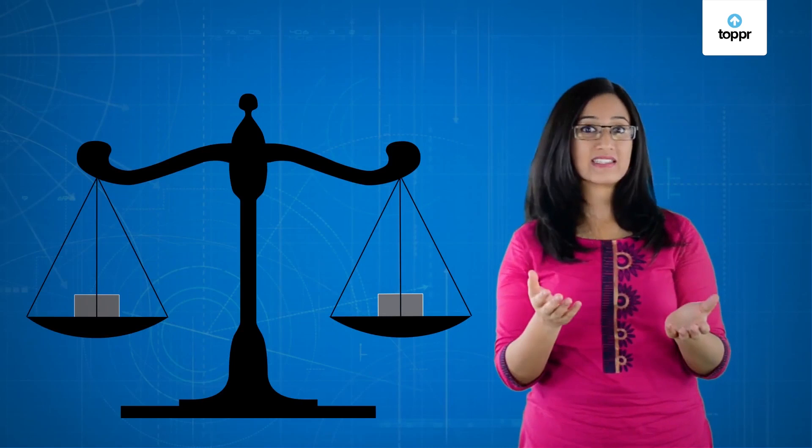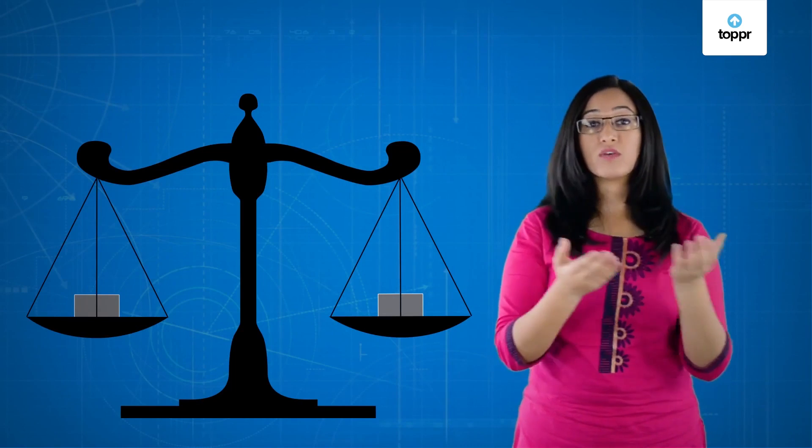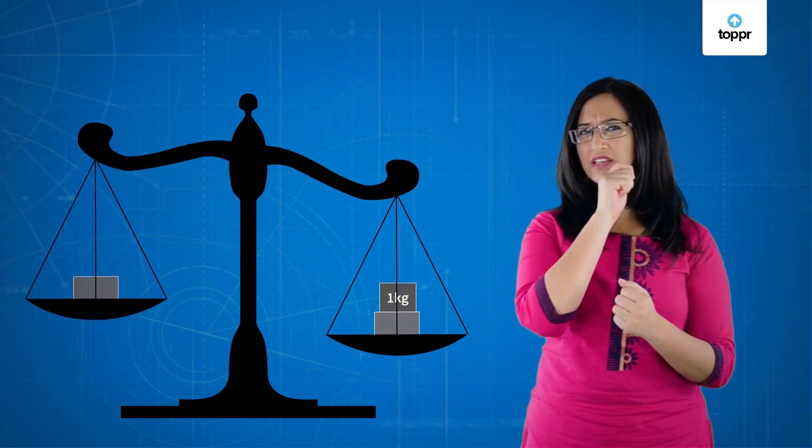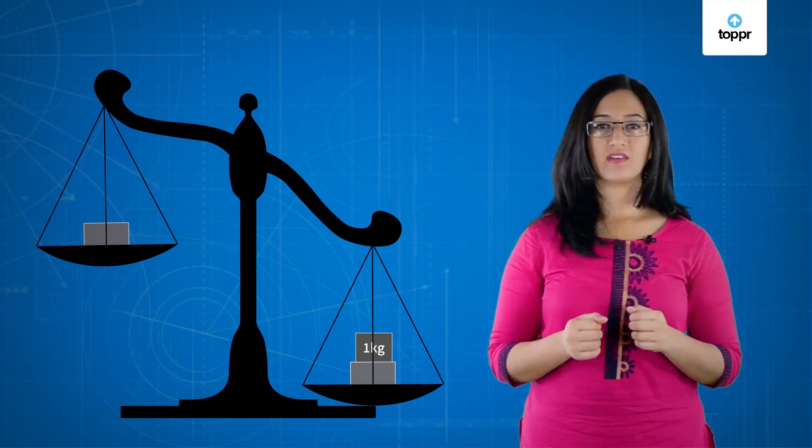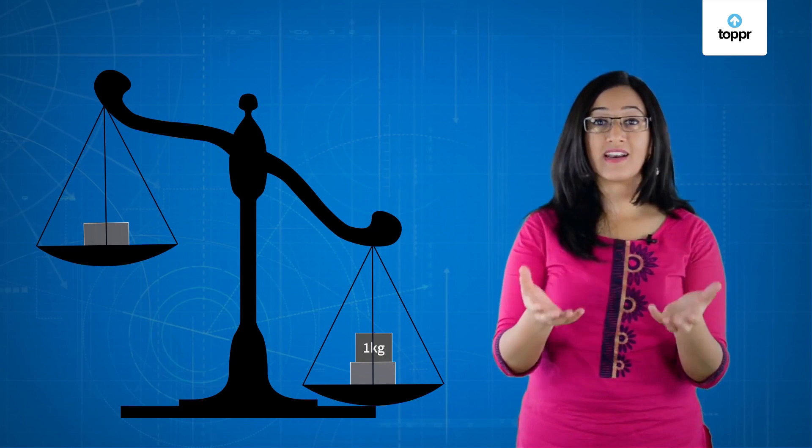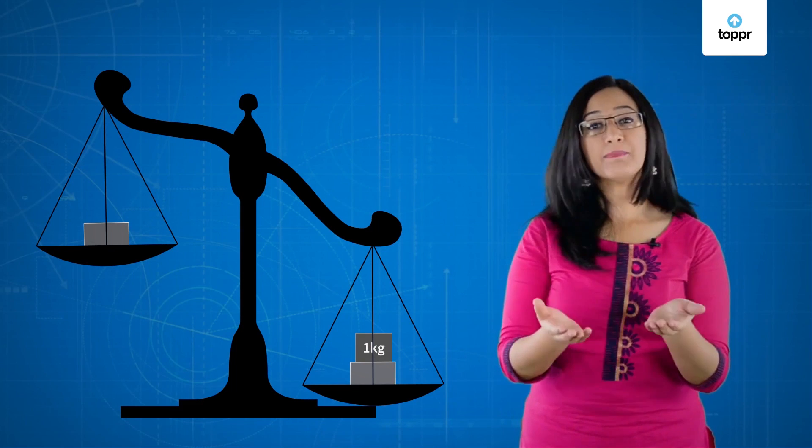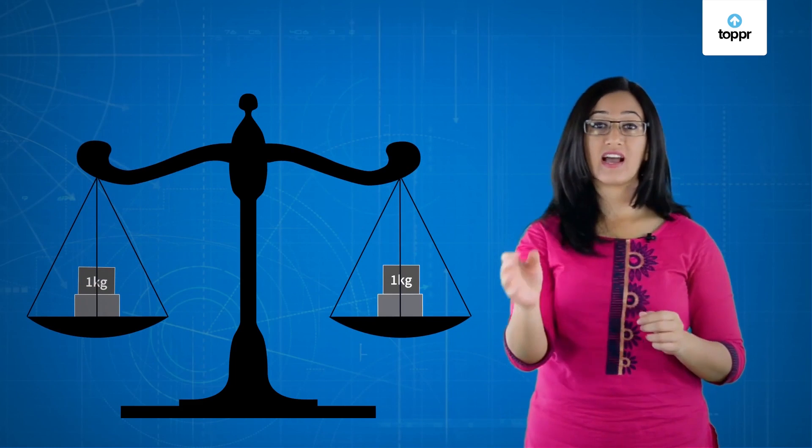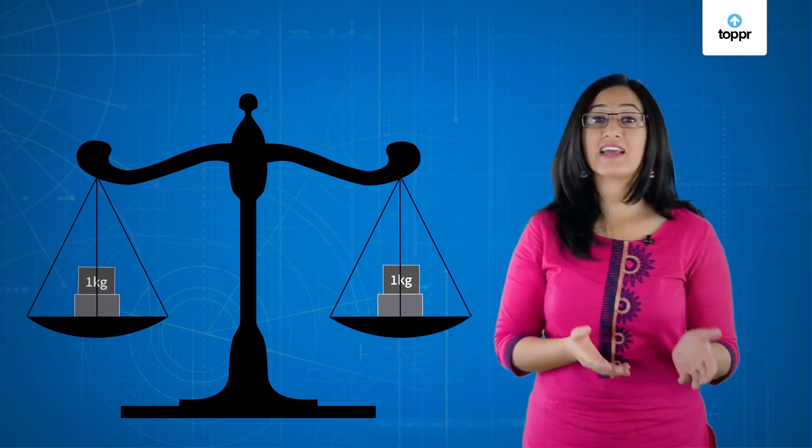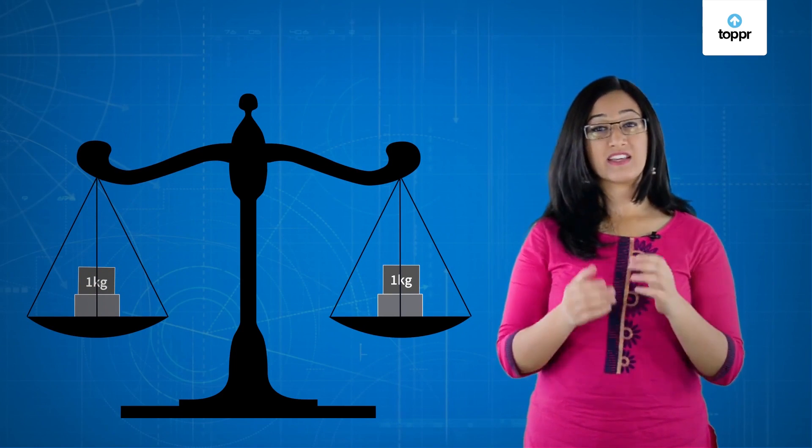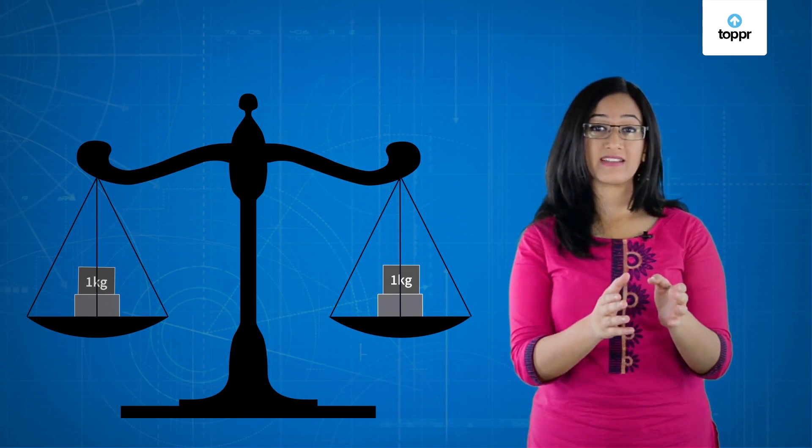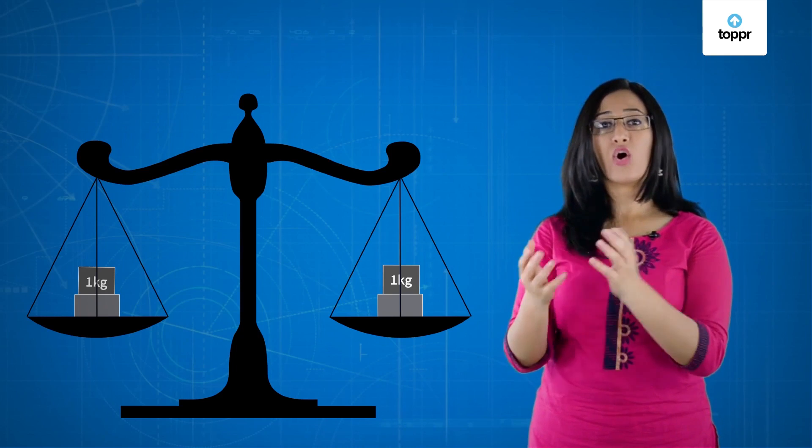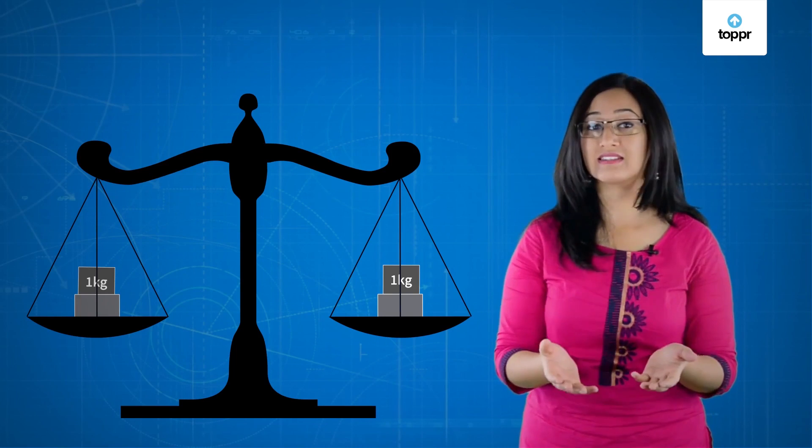Imagine you have a weighing scale with equal masses on both sides. What would happen if you added something to just one side? The weighing scale would be unbalanced, right? To keep it balanced, we have to add the same mass on both the sides. An equation is like a weighing scale in maths. If you add or remove anything on one side, you have to do the same thing on the other side as well. Or the equation won't balance.